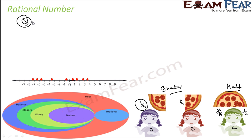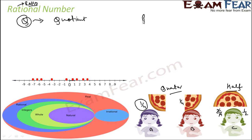These numbers are called rational numbers and they are written as Q. Why is it written as Q and not R? Because Q stands for quotient. And the word rational number actually came from ratio.